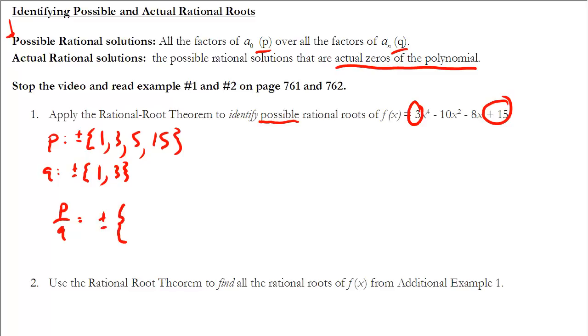I'm going to write it as plus or minus. And then I'm going to list all of them. So I have 1 over 1, 3 over 1, 5 over 1, 15 over 1. So I've done all of them over 1. And then we'd want to do all of them over 3. So we'd have 1 over 3, 3 over 3, 5 over 3, and 15 over 3.